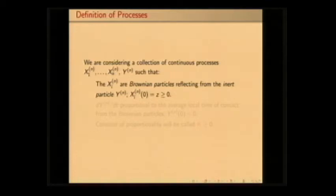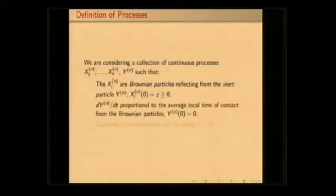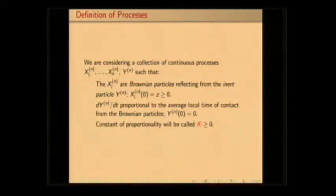All the Brownian particles are going to have an initial condition at z — this can be generalized. The velocity of this massive barrier is proportional to the average local time of contact between the Brownian particles and the massive barrier, and we're beginning the massive barrier at zero. This constant of proportionality, which controls the strength of the interaction of the impulse, is going to be called k, non-negative.